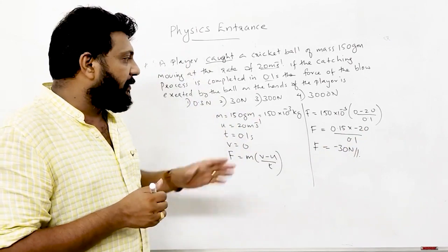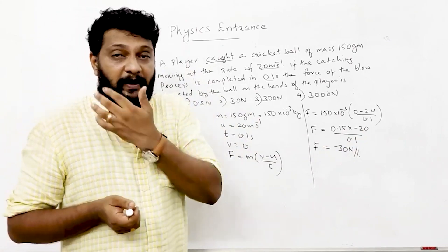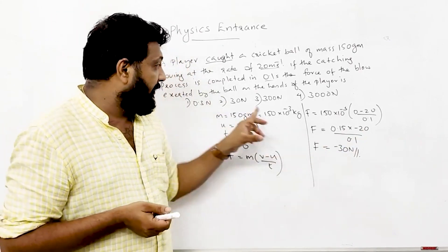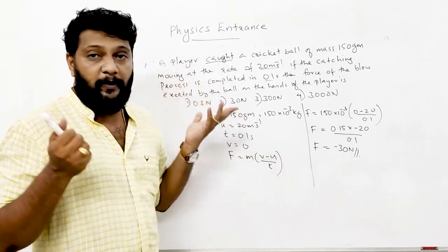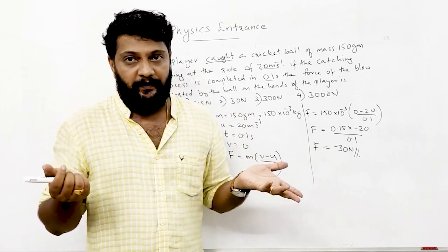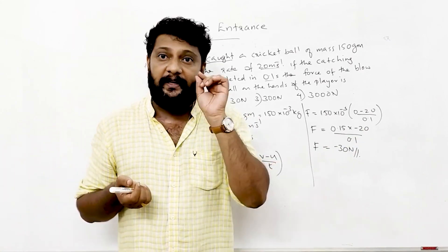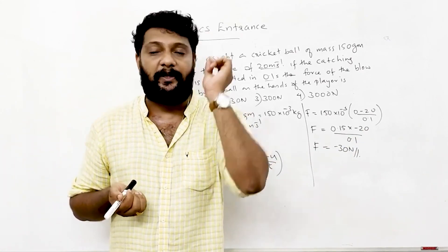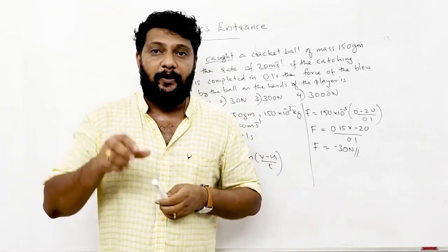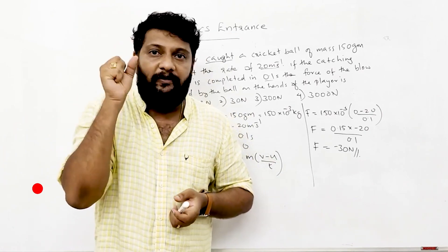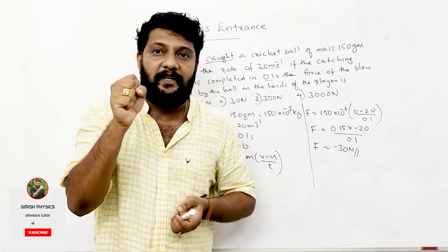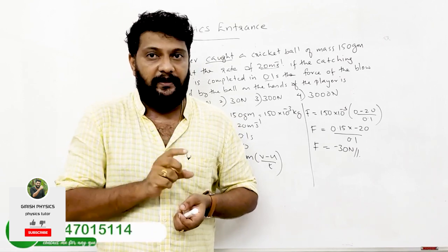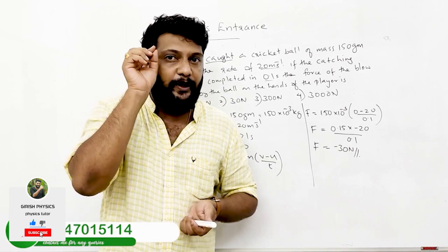The magnitude is 30 Newton. The final velocity is zero because the ball is caught, and the force on the hands is 30 N.